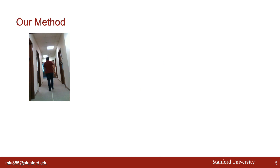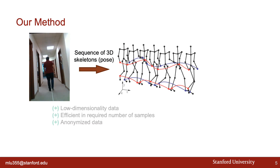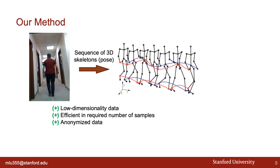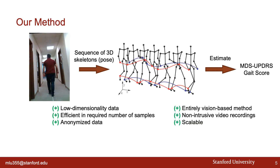For the first time, we propose a computer vision-based model that predicts motor impairment severity using only video. We do this by first extracting 3D human skeleton data from the videos, which greatly reduces the dimensionality of the data, is efficient in the number of acquired samples, and anonymizes the data. Only this skeleton is used to estimate the gait score. Therefore, our method is entirely vision-based, uses non-intrusive video recordings, and is scalable, because all we need is videos of patients walking.